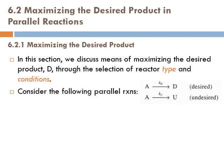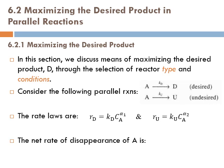Both reactions could take place. The rate laws are written as r_D = k_D × C_A^α1 (power law model) and r_U = k_U × C_A^α2. The net rate of disappearance of A is: -r_A = -r_A1 + -r_A2, where -r_A1 = r_D and -r_A2 = r_U, so we write the net rate of disappearance accordingly.